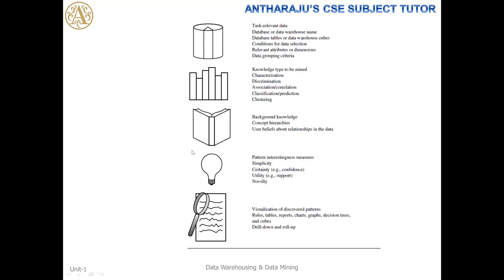A single diagram covers all five task primitives. The first primitive, task-relevant data, is defined by the database or data warehouse name. It involves: database tables, data warehouse cubes, conditions of data selection, relevant attributes or dimensions, and data grouping criteria. These are the relevant tasks performed before doing the actual data mining.